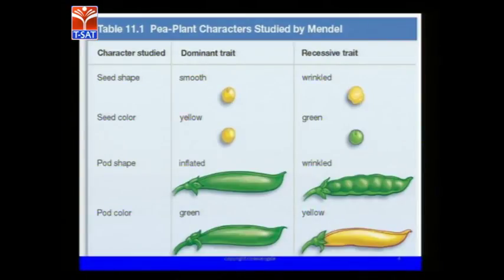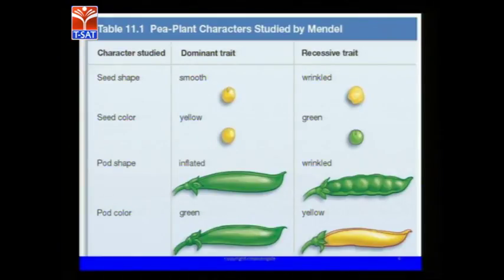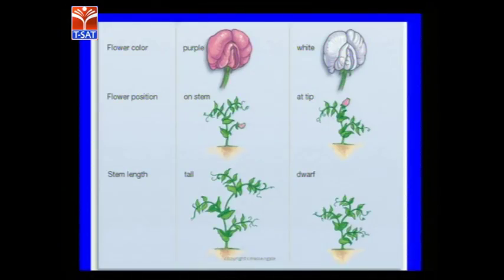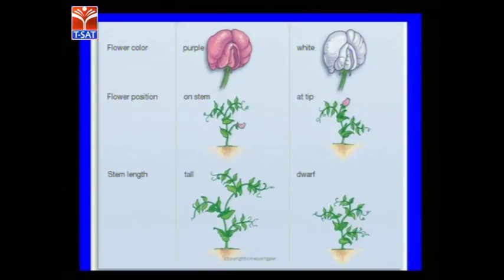The seven contrasting characters studied by Mendel are: seed shape — dominant smooth, recessive wrinkled; seed color — dominant yellow, recessive green; pod shape — dominant inflated, recessive wrinkled or constricted; pod color — dominant green, recessive yellow; flower color — dominant purple, recessive white; and flower position — dominant axillary on the stem, recessive tip.